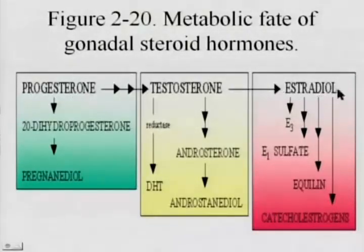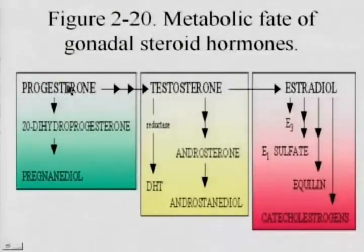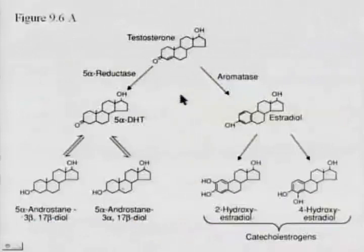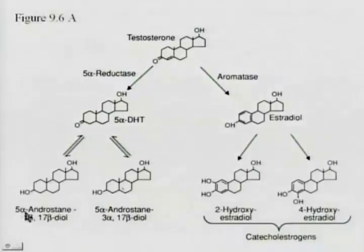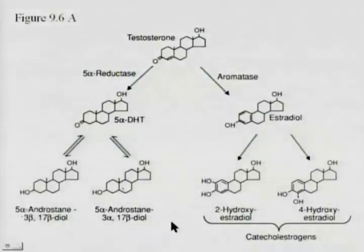Testosterone can be acted on by 5-alpha reductase to produce 5-alpha dihydrotestosterone, and additional enzymatic alterations can produce 5-alpha androstane-3-beta,17-beta diol and 5-alpha androstane-3-alpha,17-beta diol. The difference between these two products is the orientation of the hydroxyl group at the 3 position — beta versus alpha orientation.